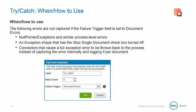There are certain errors that are not caught if the failure trigger is set to document errors: null pointer exceptions and similar process-level errors, an exception shape that has the stop single document checkbox turned off, and connectors that cause a full exception error to be thrown back to the process instead of capturing the error internally and logging it per document.